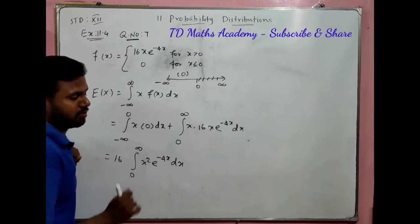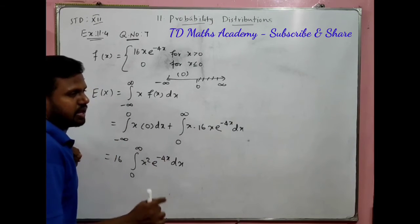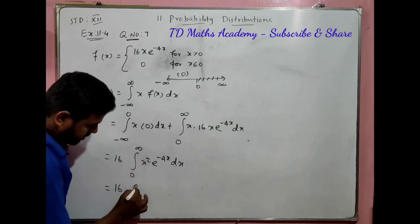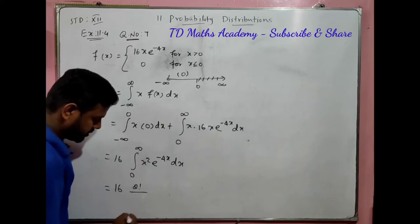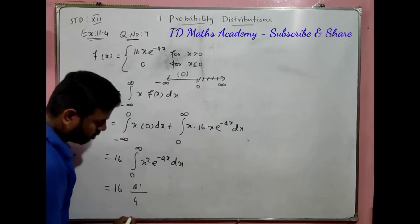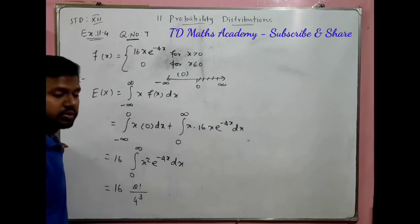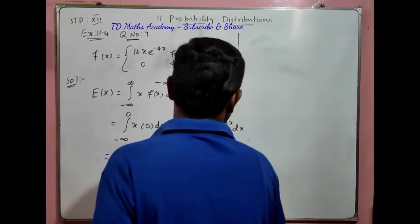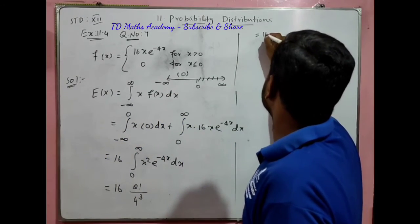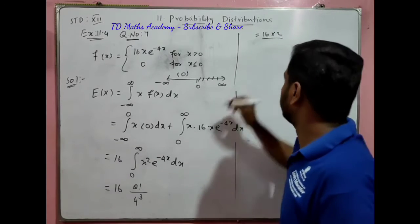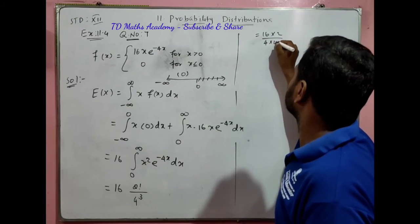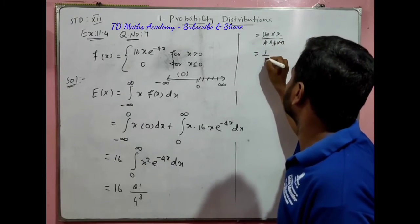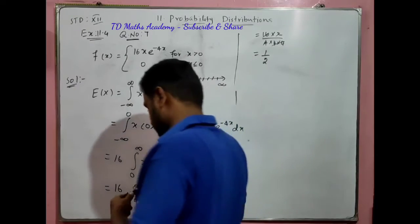Using the gamma formula n factorial divided by a^(n+1). Here, 16 times 2 factorial divided by 4^3. 2 factorial equals 2, so 16 times 2 divided by 64. 4 cubed is 16 times 4. The 16s cancel, giving answer 1/2. So expectation of x equals 1/2.